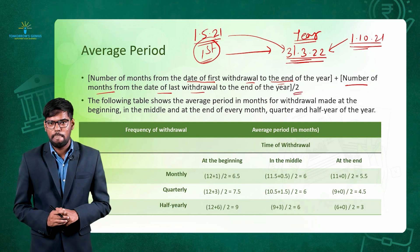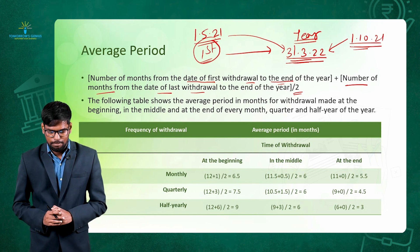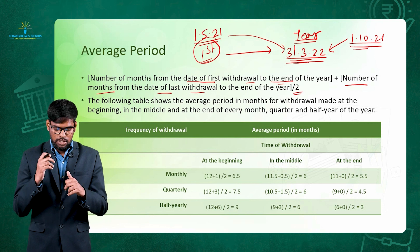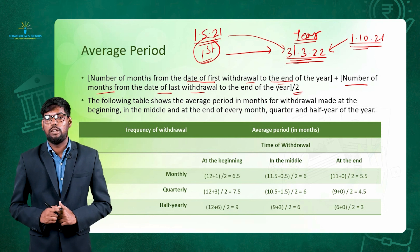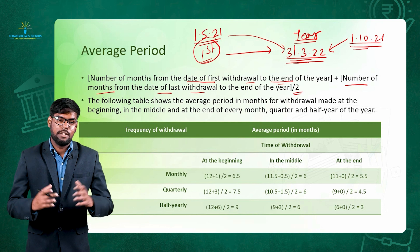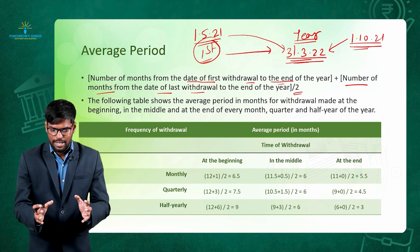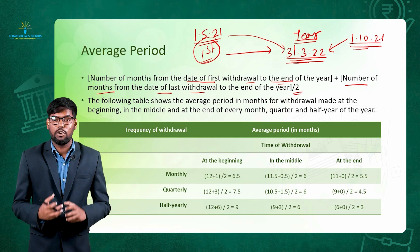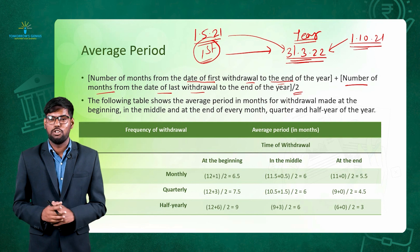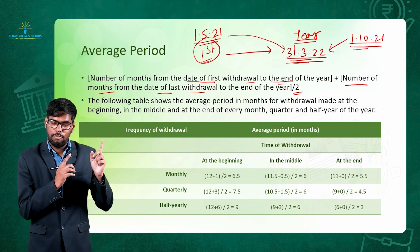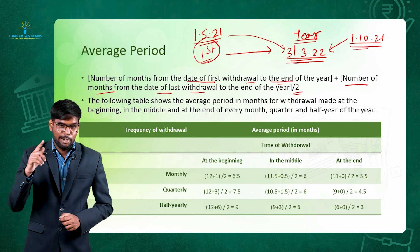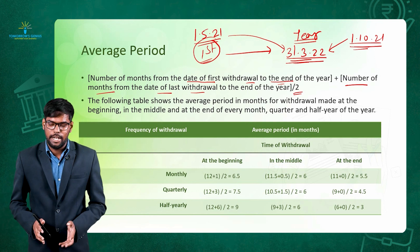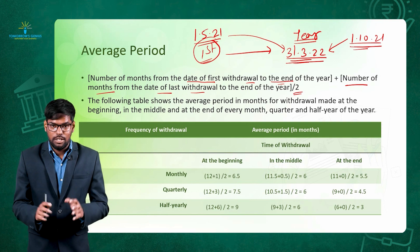This is the formula for calculating the average period. However, in the examination hall this calculation can be time-consuming, especially when there are multiple partners. Calculating from the first date of withdrawal to the end of the year, and then adding the last date of withdrawal to the end of the year for each partner, is not practical. So there is a trick — a table — that you should remember for calculating the average period quickly.